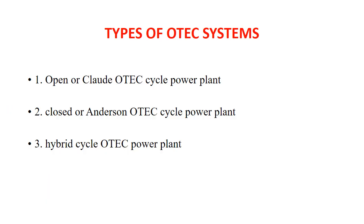The types of OTEC systems: there are three types of OTEC systems. The first one is the open cycle OTEC power plant. The second one is the closed cycle, or Anderson, OTEC cycle power plant. The third one is the hybrid cycle OTEC power plant. These are the three types of OTEC systems.